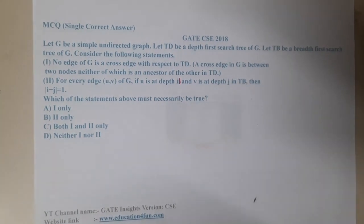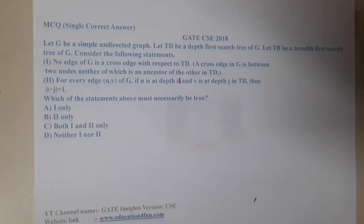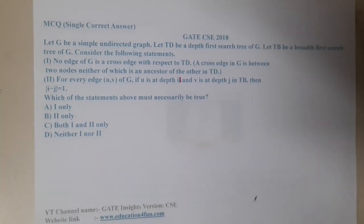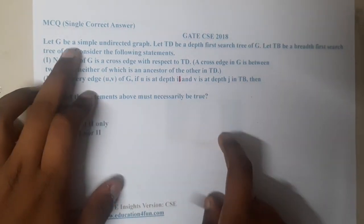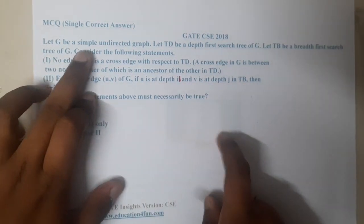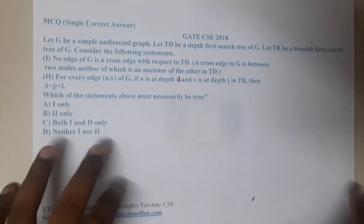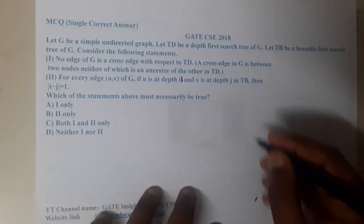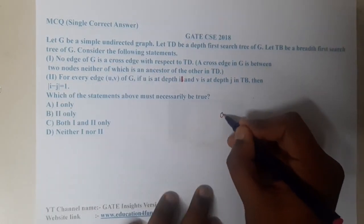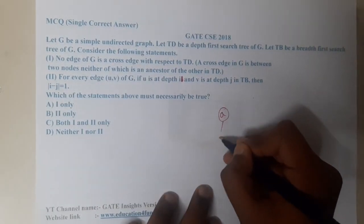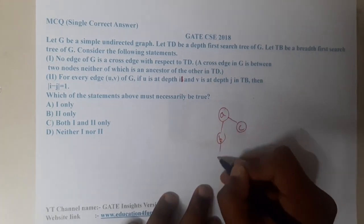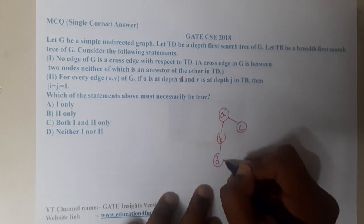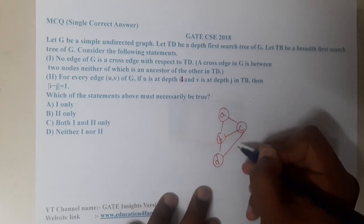Hello guys, we are back with our next lecture. This question belongs to GATE CSE 2018. Let G be a simple undirected graph. Let us start drawing the graph — nodes A, B, C, D — and connect them.